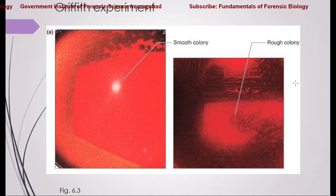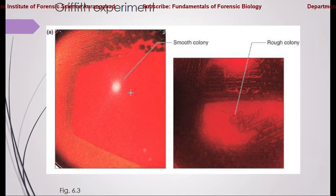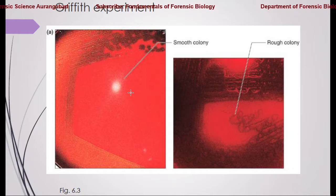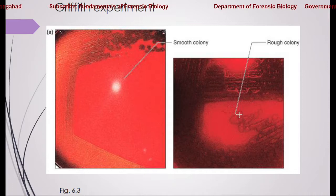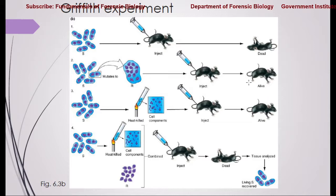We call them S strain and R strain because of their appearance as bacterial colonies on a petri plate. The smooth strain, which is virulent, shows smooth colonies because of the presence of a capsule. The antigenic components reside in the capsule, protecting the cells. The R strain lacks the capsule and its colony appears rough on the surface of a petri plate.